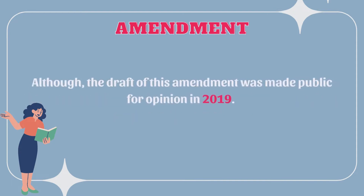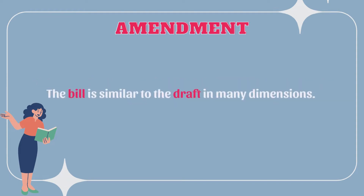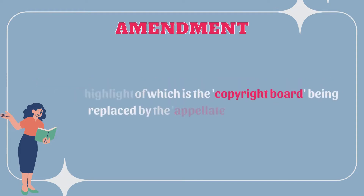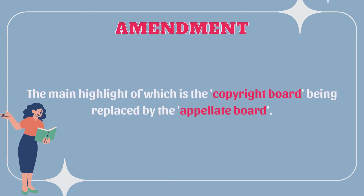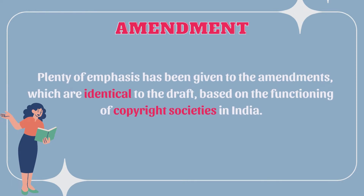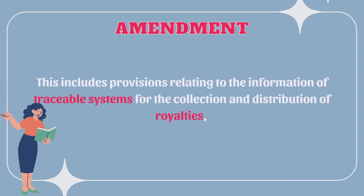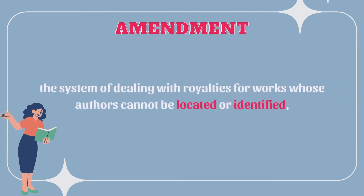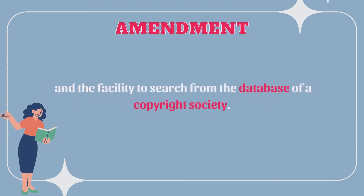Although the draft of this amendment was made public for opinion in 2019, the bill is similar to the draft in many dimensions. The main highlight is the Copyright Board being replaced by the Appellate Board. Amendments based on the functioning of copyright societies in India include provisions relating to the formation of traceable systems for the collection and distribution of royalties, dealing with royalties for works whose authors cannot be located or identified, and the facility to search from the database of a copyright society.